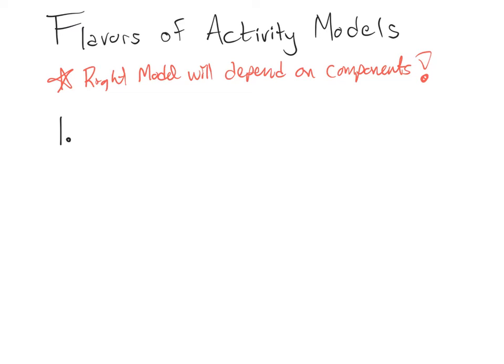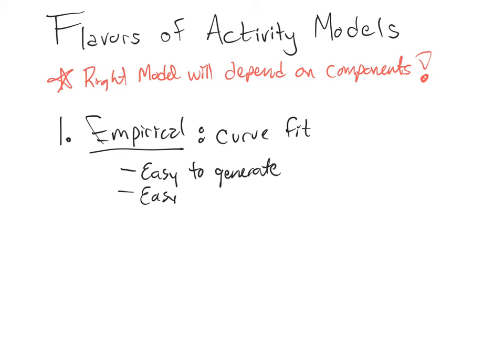So let's talk about the first kind of flavor, which is purely empirical. That's just a curve fit to some data. And what's nice about that is it's easy to generate and it's usually easy to use, but it's got severely limited applicability, like way limited. It's only really accurate for exactly the conditions under which it was written, and maybe a little bit further.